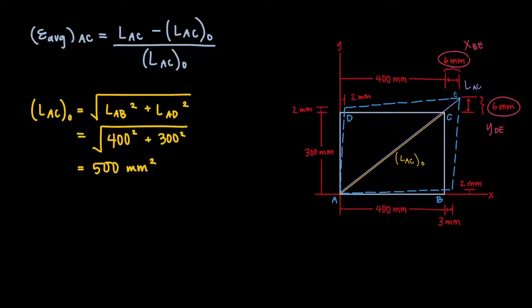We can find the length of that diagonal by using the Pythagorean theorem, where C equals the root of A squared plus B squared. A squared will be the length of side AB squared, and B squared will be the length of side AD squared. We don't really need that equation though, since it's just a 3-4-5 triangle. The hypotenuse of a 3-4-5 triangle is 5, and since the millimeters are all expressed to the hundreds, L₀ is going to be 500 millimeters squared.